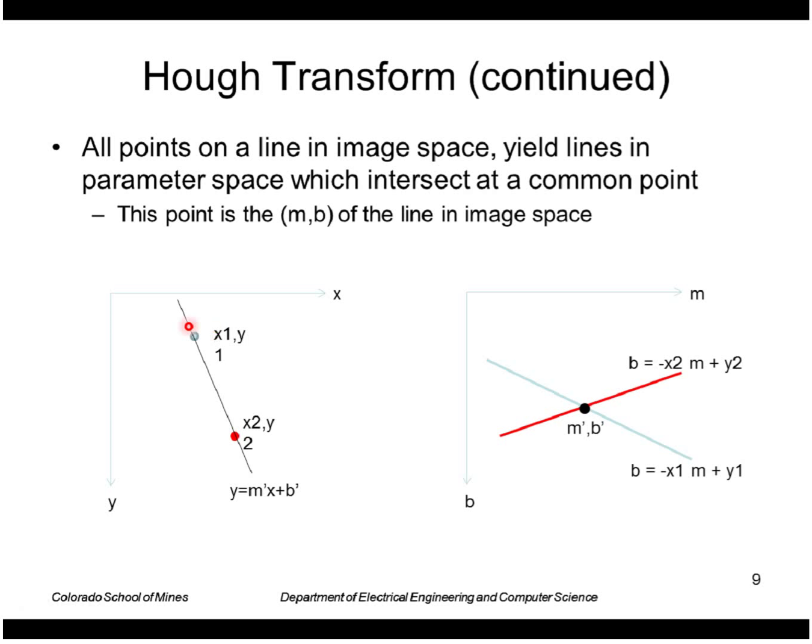Here are two edge points (x1, y1) and (x2, y2). The lines that pass through (x1, y1) are all the lines satisfying the equation b = -x1*m + y1. So those points lie along this blue line in the m and b space. The lines that pass through (x2, y2) are all the lines that satisfy this equation.